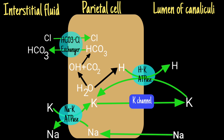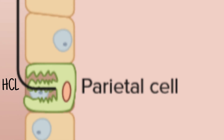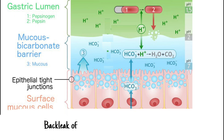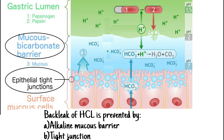The chloride obtained from the exchanger and through chloride channels is released to the lumen through chloride channels at the luminal side. Therefore, HCl is released into the branched canaliculi, then to the secretory end of the parietal cell, and finally to the gastric lumen. The back leak of HCl is prevented by alkaline mucous barriers and tight junctions between the epithelial cells.